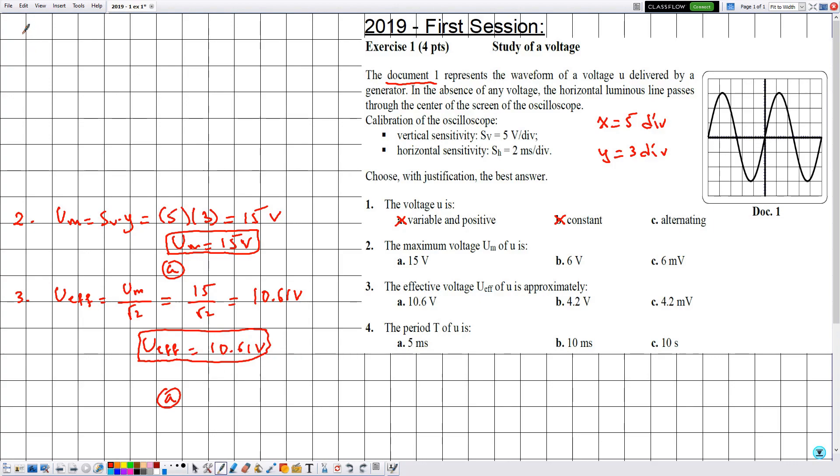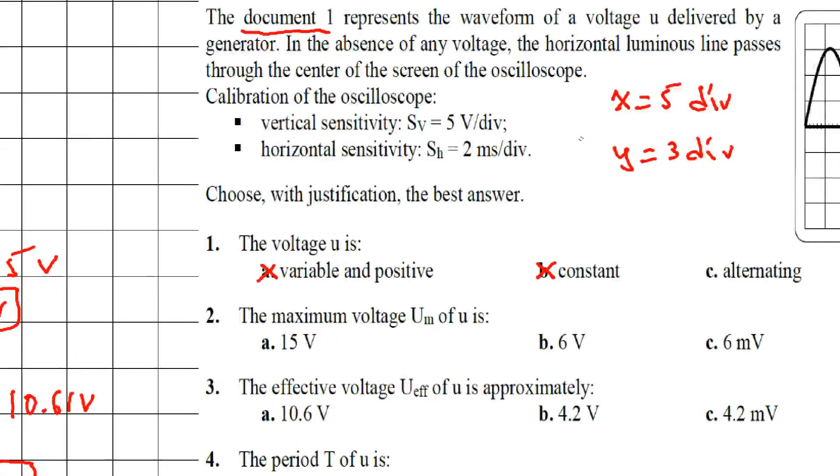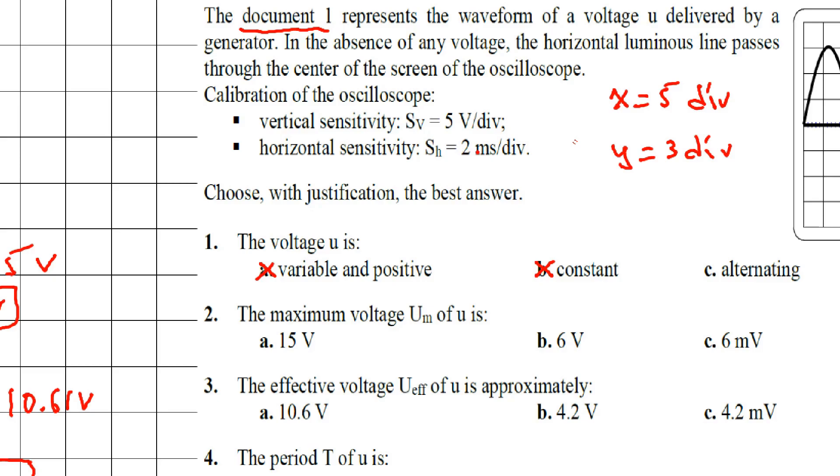Now for part b, the period T of u. Let's calculate the period, which is given by Sh multiplied by x. They gave me the value of Sh in milliseconds, but millisecond is not the SI unit of time. To convert from millisecond to second, we divide by 1000.